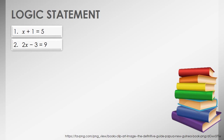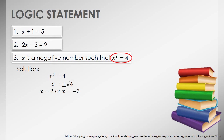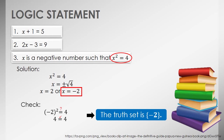The third example requires solving for x that makes the open sentence true. We apply the easiest method — taking the square root — which directly results in two values. Since the given open sentence states that x must be a negative number, we only consider negative 2 as the value of x. By checking, negative 2 indeed makes the open sentence true. Hence, the truth set contains negative 2.